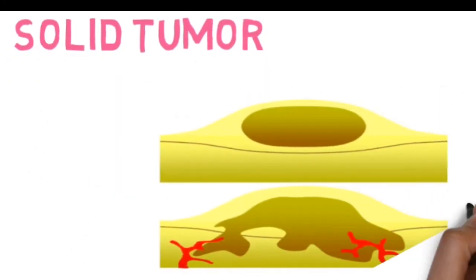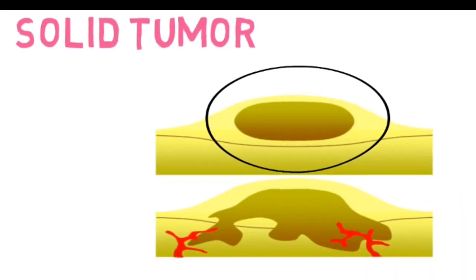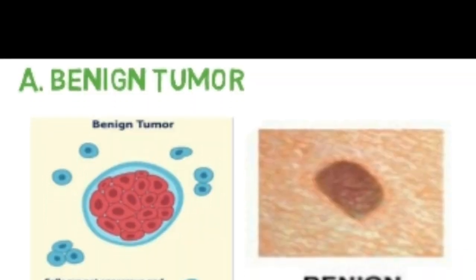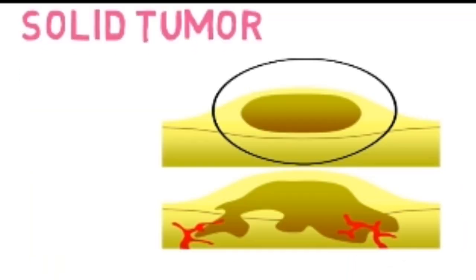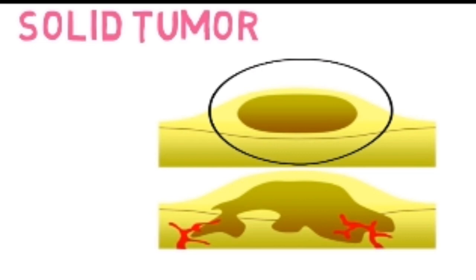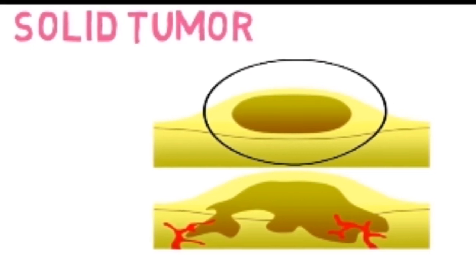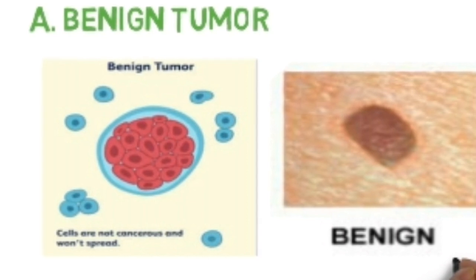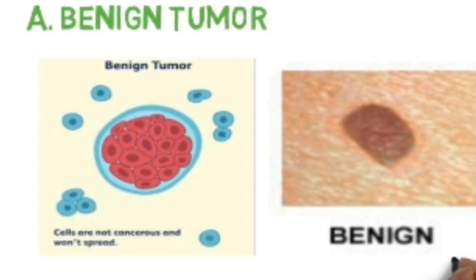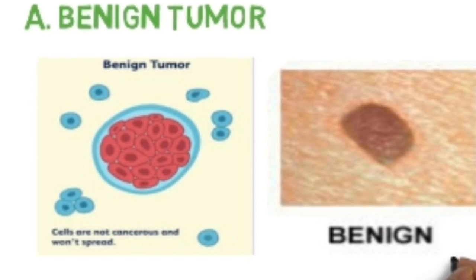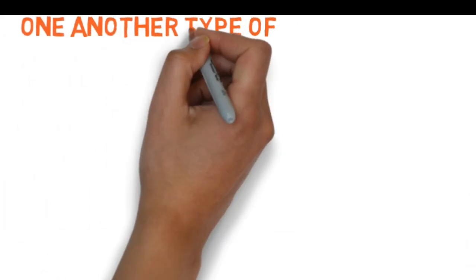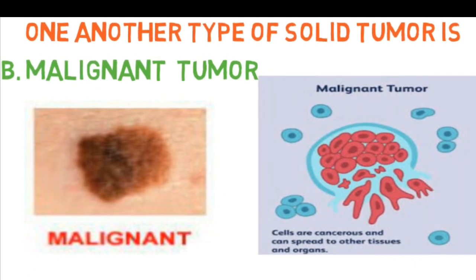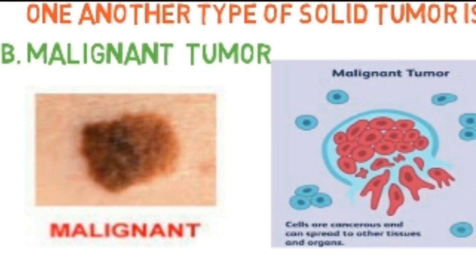Solid tumors — in this case, all cancer cells meet together at any part of the body and make a tumor. For example, a benign tumor is one type of solid tumor. Benign tumors increase slowly and cannot affect the human body. A malignant tumor is another type of solid tumor, in which cancer cells increase rapidly and are harmful to the human body.